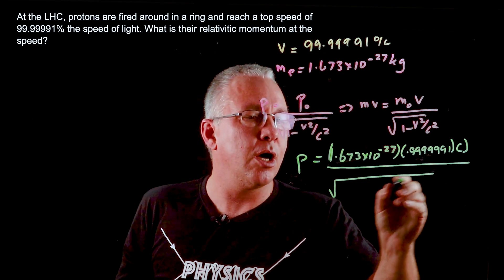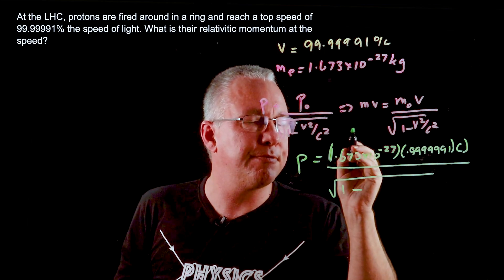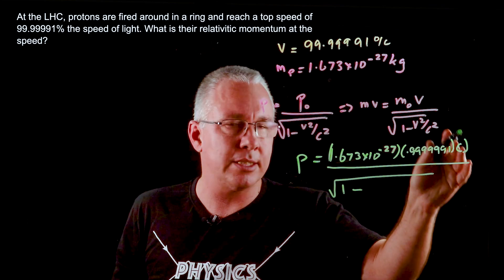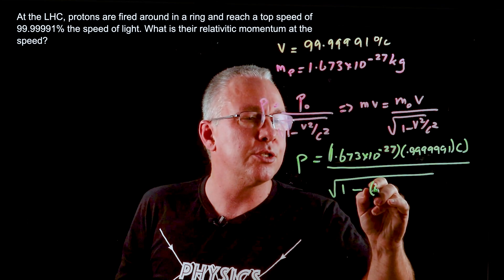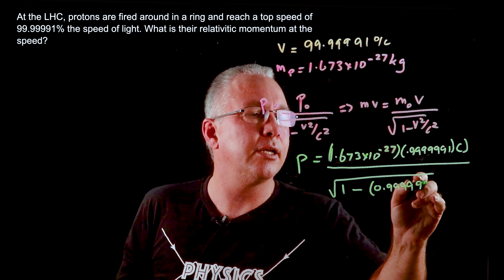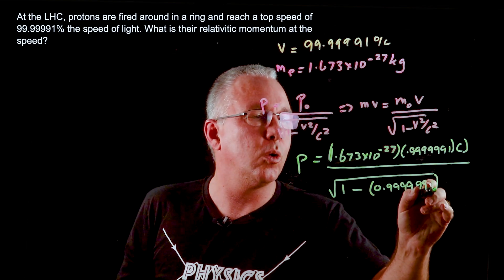Over the square root of 1 minus v squared over c squared. Now it's this value all squared. So the c squares actually cancel out so I might as well just go 0.9999991 all squared.